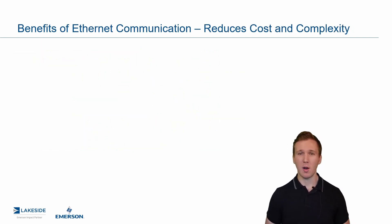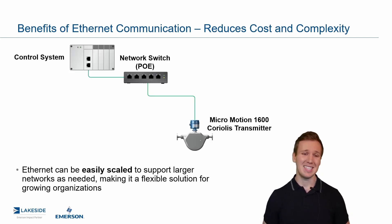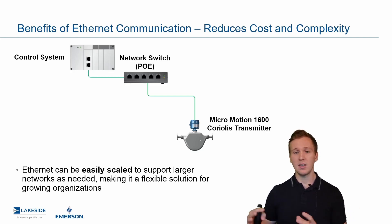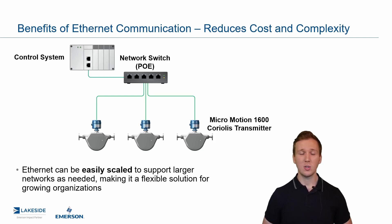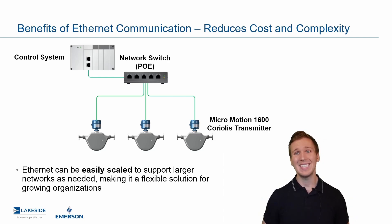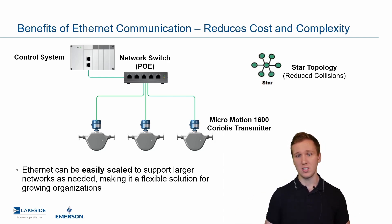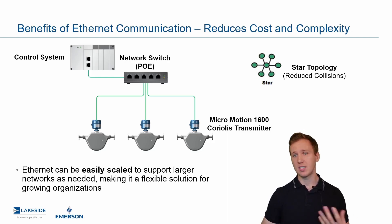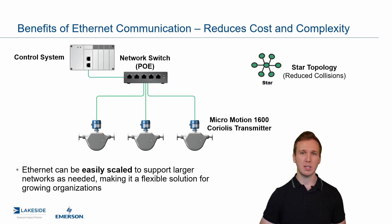The other piece is it just reduces cost and complexity. Ethernet networks can be very easily scaled. So if we have a typical system here where our network switch is providing power to our Coriolis transmitter — maybe we're monitoring flow or density on one line — if you wanted to add in an additional two sensors, you would just add them in, connect up to that same network switch via the Ethernet cable. The wiring is a very simple process, which saves time and ultimately reduces the complexity and cost. We utilize what's called a star topology in terms of how the formation is, so the transmitters just connect right back to that network switch or power sourcing equipment. This aids in reducing complexity compared to other topologies such as ring or point-to-point.